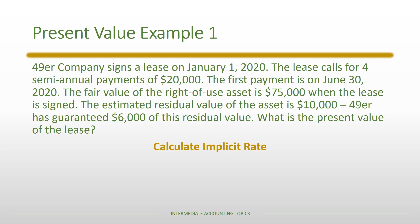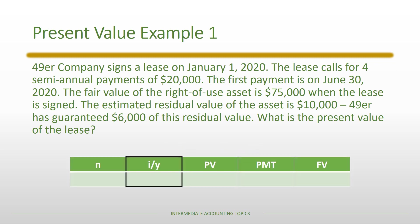The first step is to calculate the implicit rate in the lease. Using our TVM framework, the I/Y button is highlighted because that's what we're solving for. N is four for four semi-annual periods. From the lessor's perspective, they're giving up an asset worth $75,000 at the beginning of the lease — a negative economic flow. They receive a positive cash payment of $20,000 each semi-annual period, and they anticipate getting the asset back worth $10,000 — a positive economic flow.